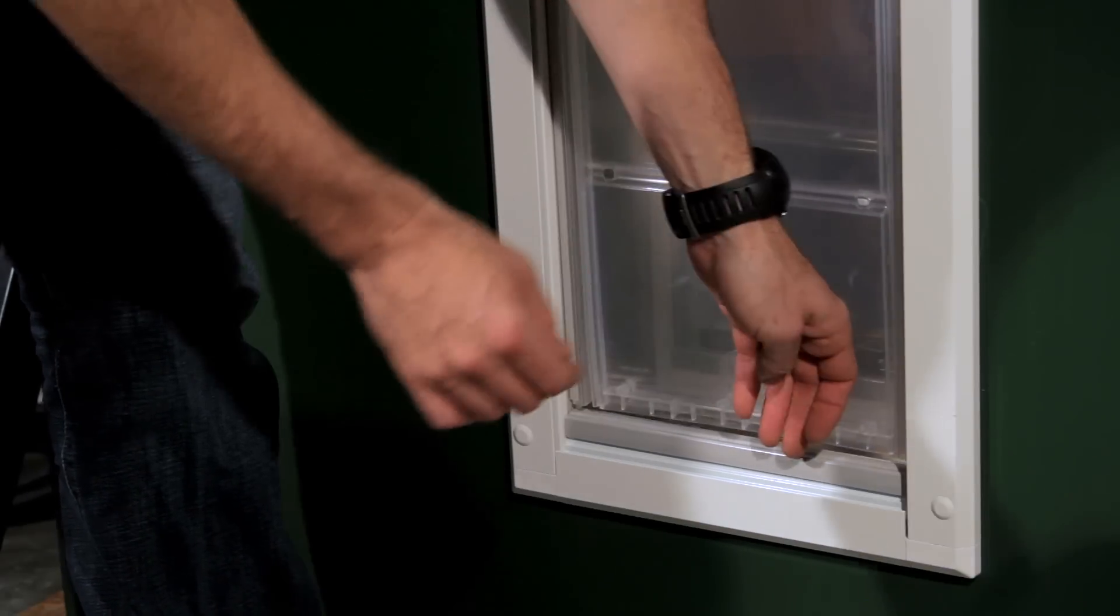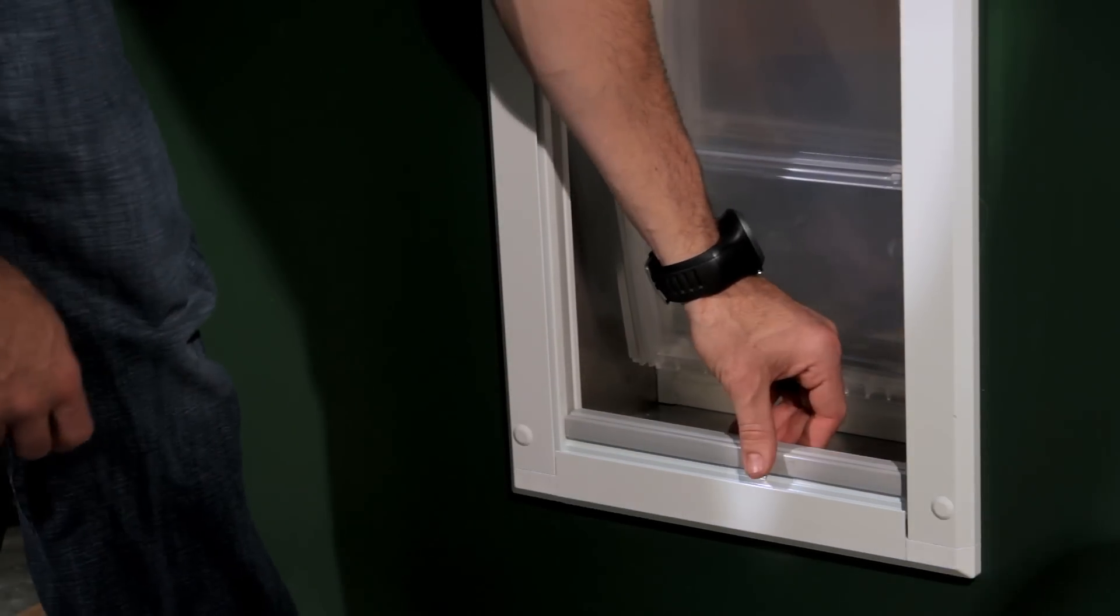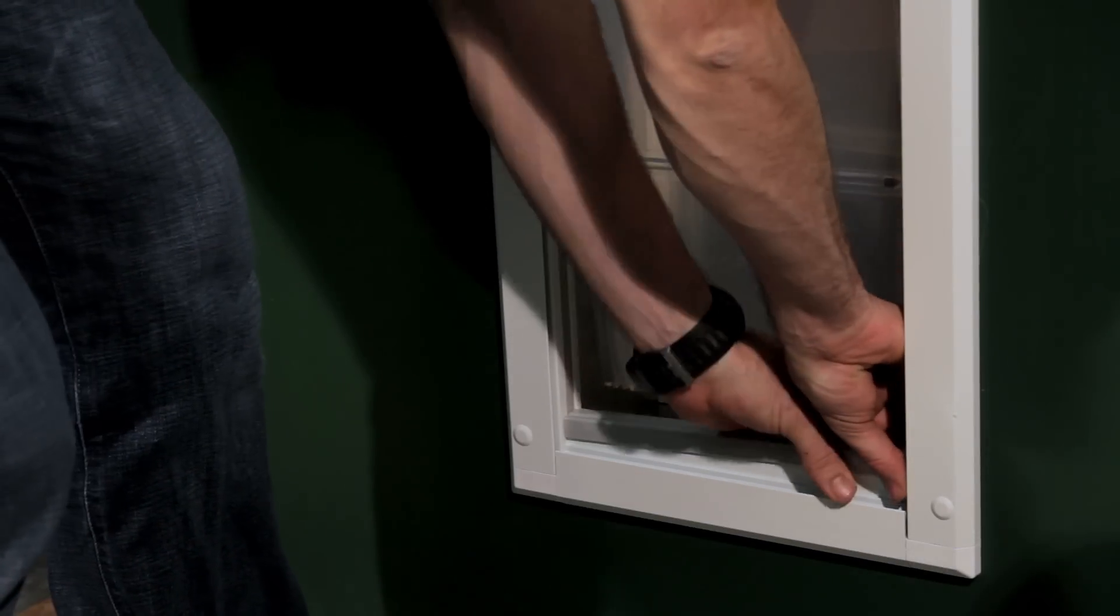Then you want to remove the threshold. The threshold is the gray piece that floats up and down. To remove it you slide it to one side and pull up vertically on one side.